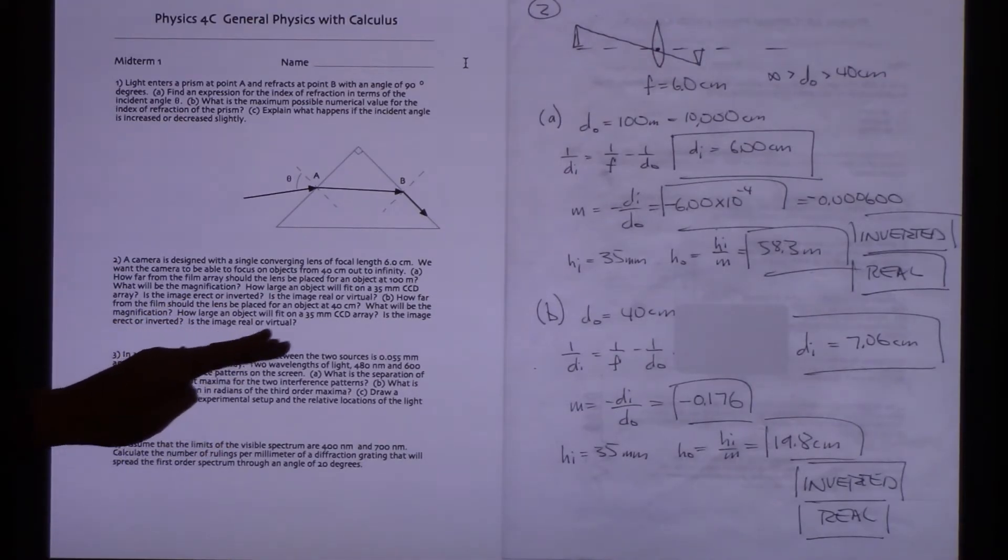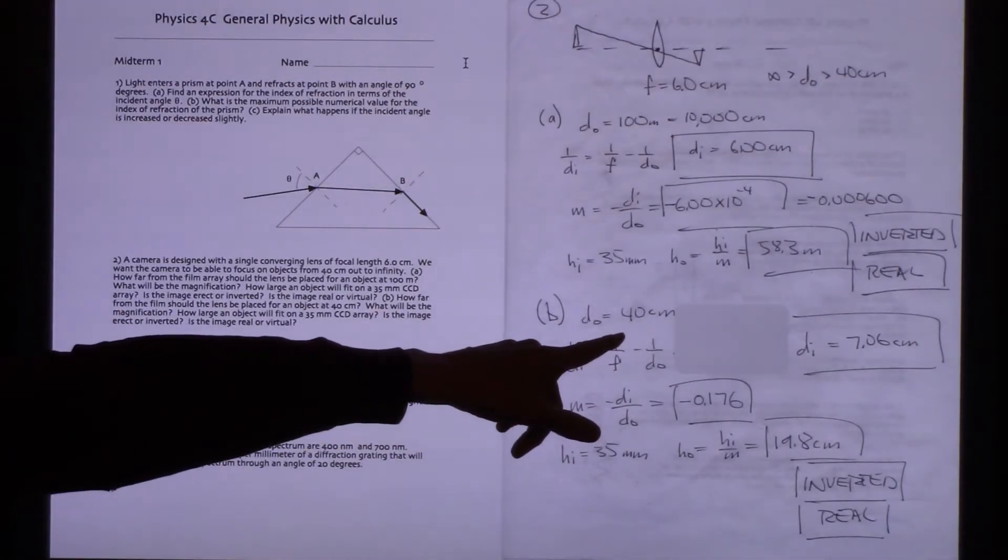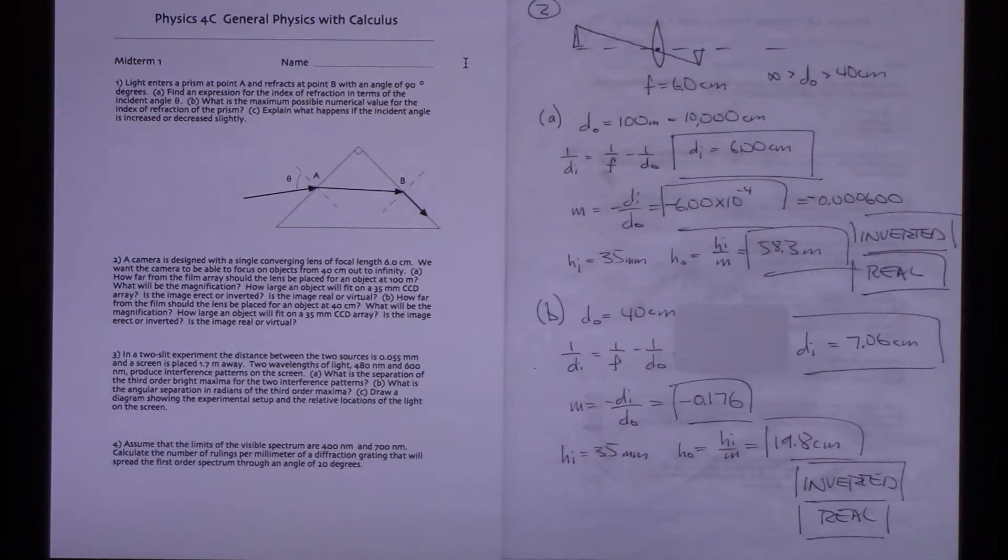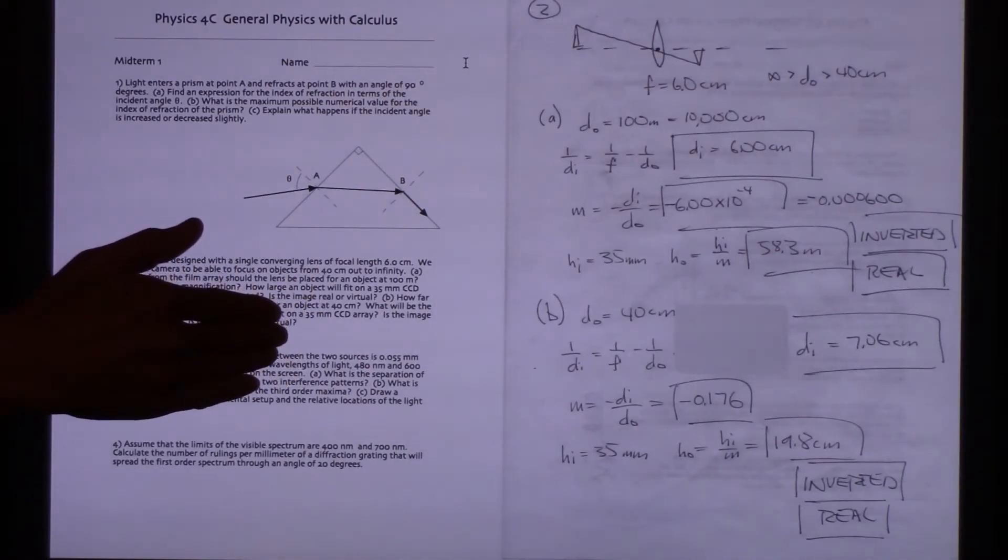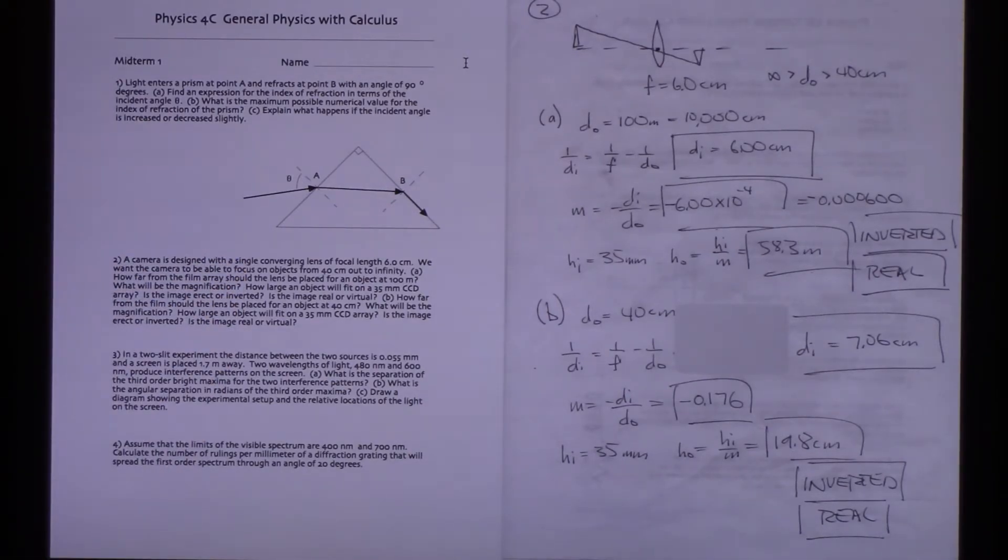In part B, what we're going to do is recalculate all those numbers. But we're going to redo those for an object distance of 40 centimeters. So it's really just changing the numbers here and then going through. In this case, we find out that the image distance is a little over 7 centimeters. So in order for this camera to operate successfully, to focus at something as close as 40 centimeters away and also focus all the way out to infinity, the lens only has to move back and forth about 1 centimeter.